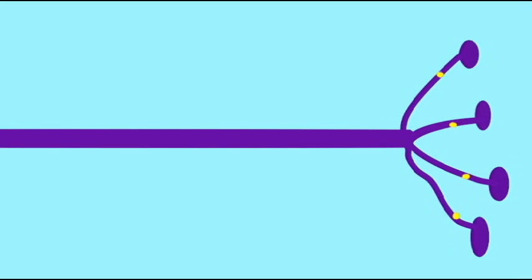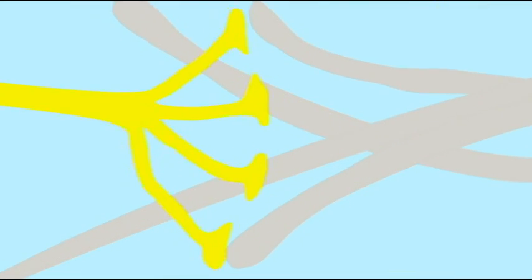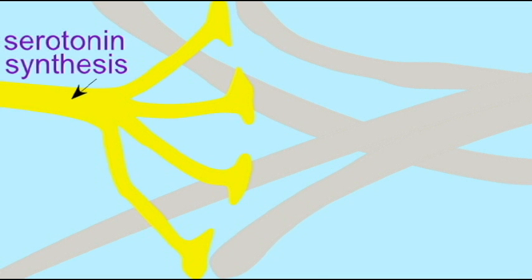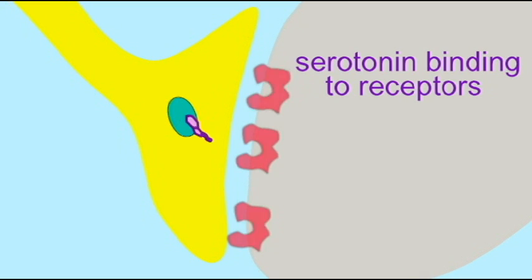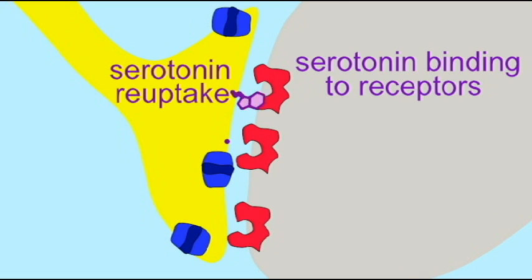At the branch points of the axon, known as the synaptic knobs, this is where a neuron may touch a second cell. So a neuron may contact another neuron, a muscle cell, a gland cell. And at the synaptic knobs, chemical messengers known as neurotransmitters can be released, which then have an effect on the second cell.